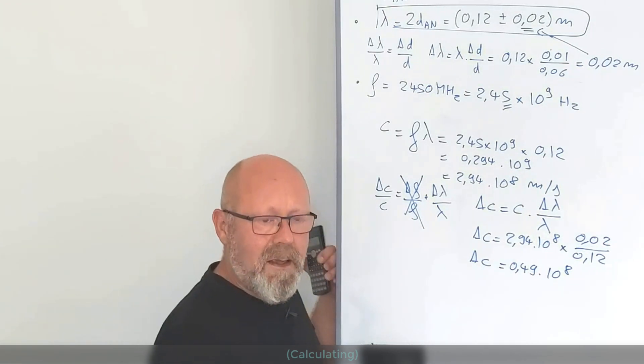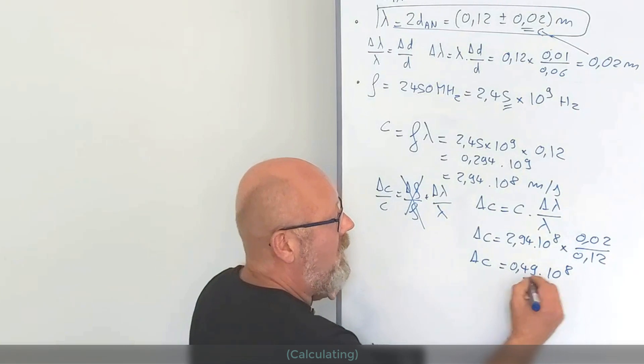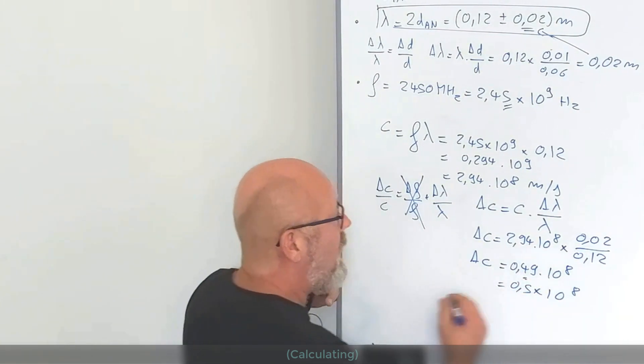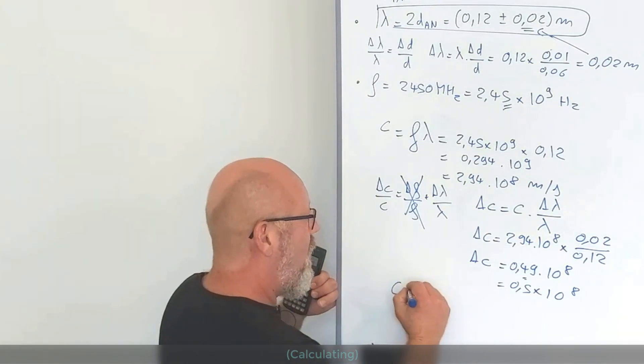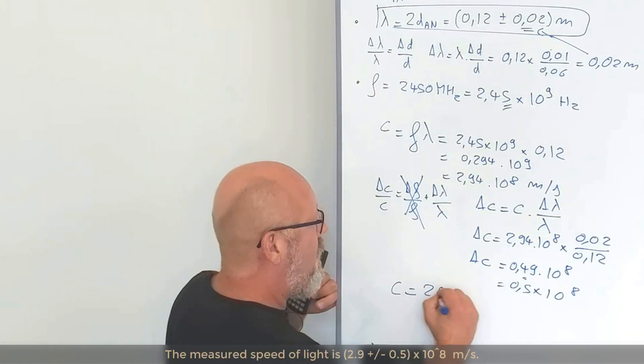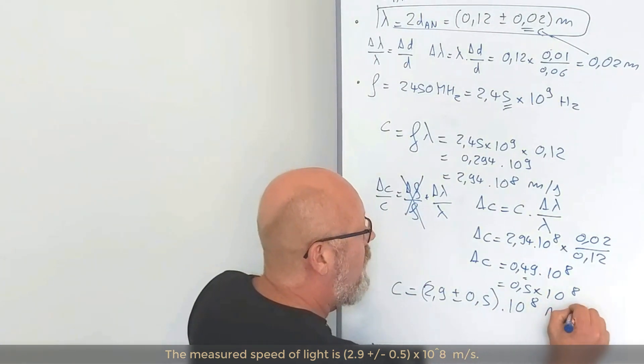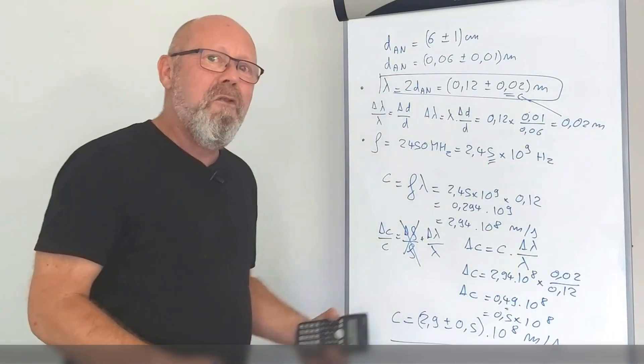So, what is significant in error is actually the first digit. So, this one. So, this is actually 0.5 by 10 to the 8. Giving us a measured speed of light with our microwave and our cheese of 2.9 plus minus 0.5 by 10 to the 8 meters per second. Pretty cool, huh?